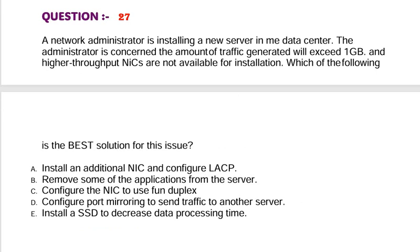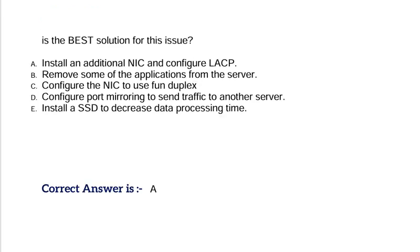Question: A network administrator is installing a new server in the data center. The administrator is concerned the amount of traffic generated will exceed 1 GB, and higher throughput NICs are not available for installation. Which of the following is the best solution for this issue? Option A, install an additional NIC and configure LACP. Option B, remove some of the applications from the server. Option C, configure the NIC to use full duplex. Option D, configure port mirroring to send traffic to another server. Option E, install an SSD to decrease data processing time. Correct answer is Option A.